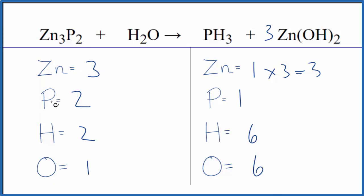Why don't we just keep going down and we'll do the phosphorus next. Let's put a two in front of the PH3. So one times two, that balances the phosphorus atoms. So we have two phosphorus atoms.